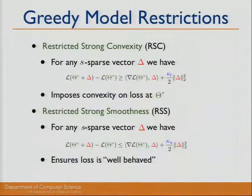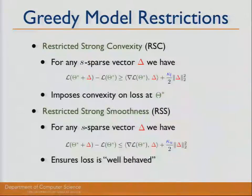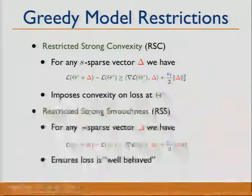The model restrictions for the greedy methods are actually much weaker than the e-representability condition. We need restricted strong convexity (RSC) and restricted strong smoothness (RSS). RSC states that for any S-sparse vector delta, the change in loss between true parameters and adding delta has a lower bound — meaning the loss is convex in every direction at the true parameters. Without this, you could minimize loss greatly while being far from the true parameters, so it's almost necessary. RSS is the upper-bound counterpart, ensuring the loss is well-behaved.